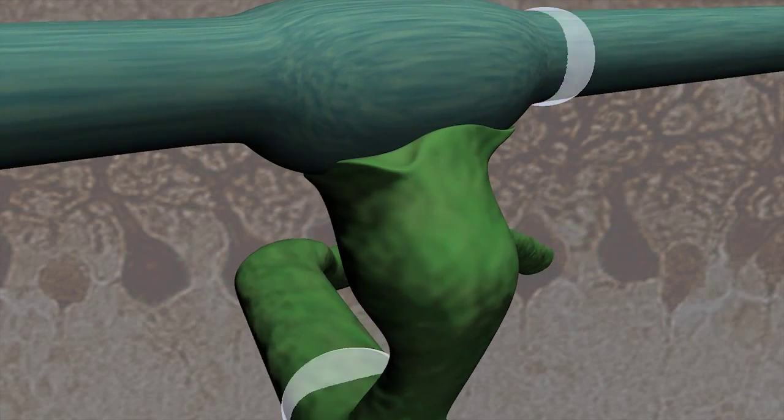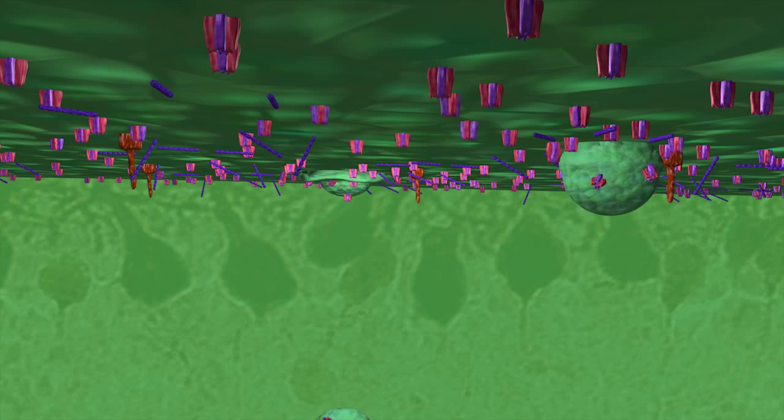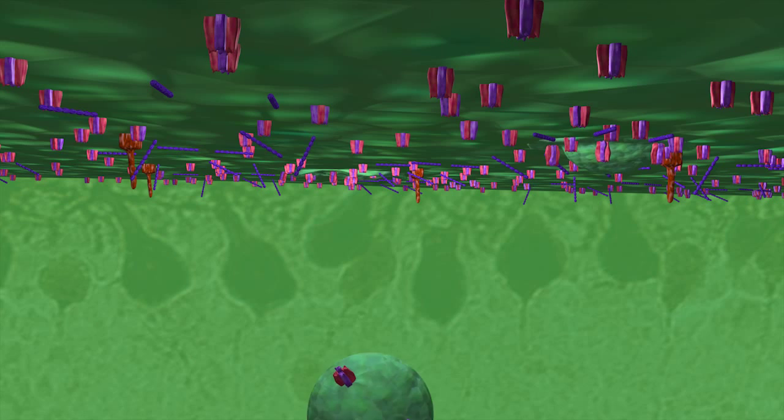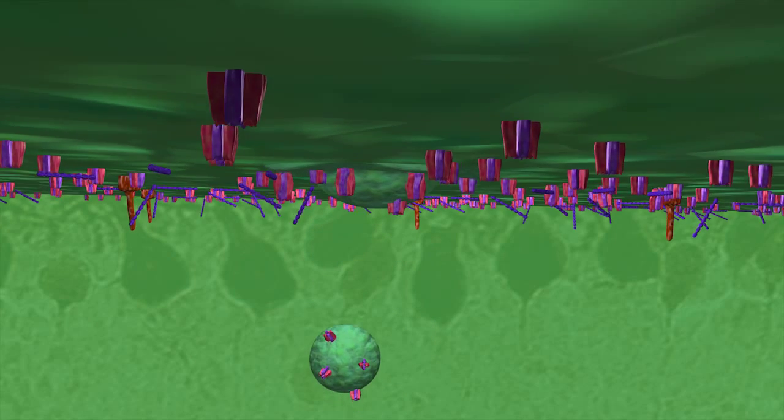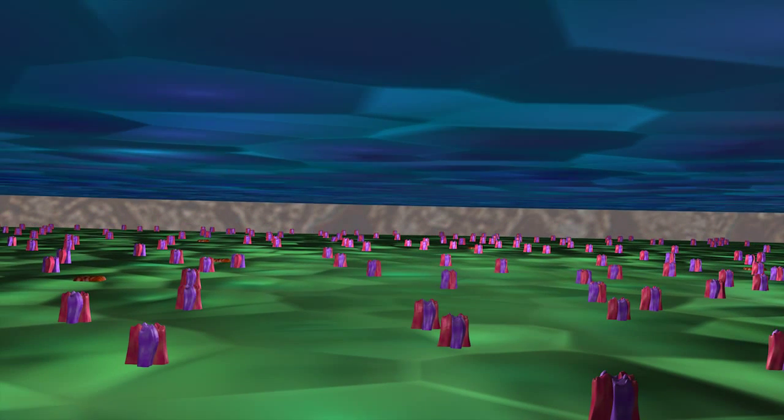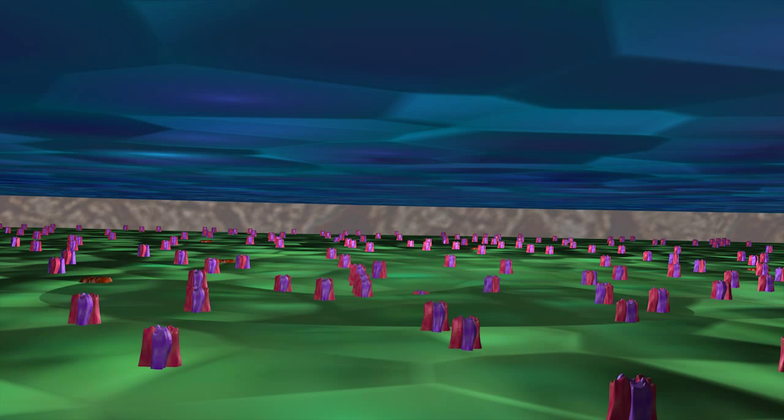Potentiation of the parallel fiber to Purkinje cell synapse can be induced following tetanic stimulation of the parallel fibers, and for this potentiation to be expressed, glutamate receptors have to be inserted in the post-synaptic part of the synapse. The insertion of additional glutamate receptors will make the Purkinje cell more sensitive for the same parallel fiber inputs.